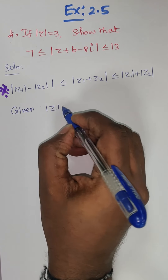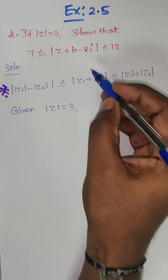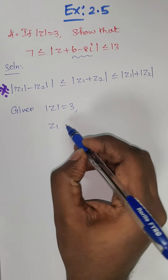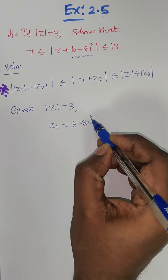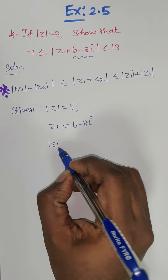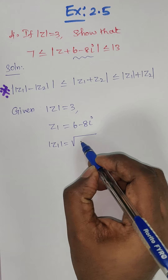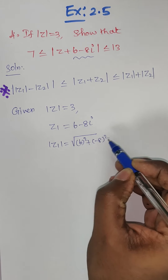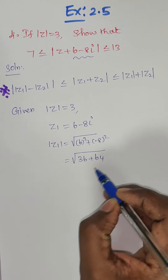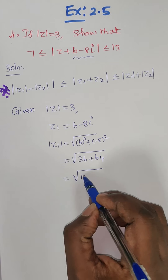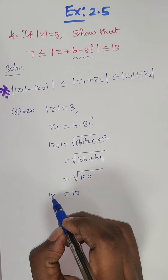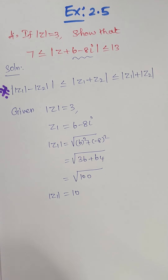The given value is mod of z equal to 3. We take z1 equal to 6 minus 8i. Now I find mod of z1, which equals root of 6 squared plus minus 8 squared, that is root of 36 plus 64, which is root of 100, so mod of z1 equals 10.